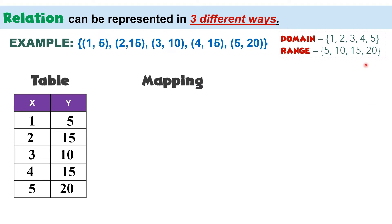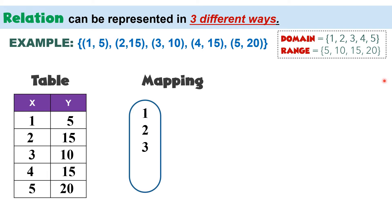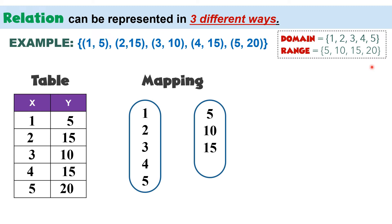The second way is through map or mapping. For this, we will have a diagram. The first diagram will be for domain and the second one will be for range. For domain, we have 1, 2, 3, 4, and 5, written inside the first diagram. For range, we have 5, 10, 15, and 20, written in the second diagram.